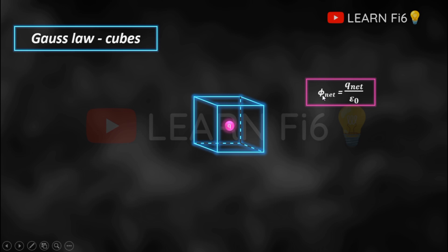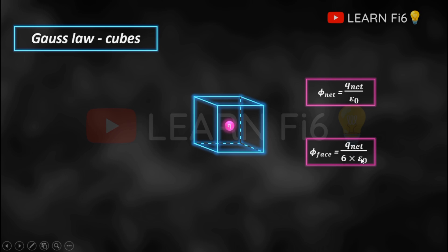The net flux is equal to net charge divided by epsilon 0. Since there are six faces and the total flux is shared equally by all six faces, the flux shared by a single face is given by the net charge divided by six times epsilon 0. This is the first case.